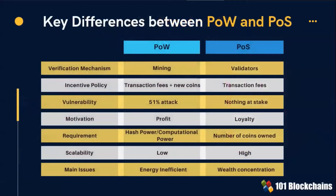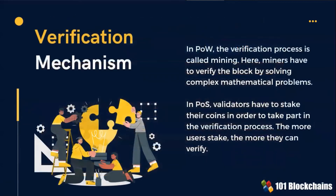There are certain differences between Proof-of-Work and Proof-of-Stake. Some of the key points are the verification mechanism, the incentive policy, vulnerability, and scalability. Regarding the verification mechanism: in Proof-of-Work, miners have to verify the block by solving complex mathematical problems. In Proof-of-Stake, validators have to stake their coins in order to take part in the verification process.